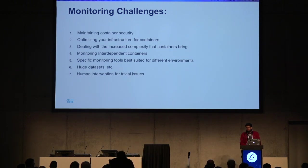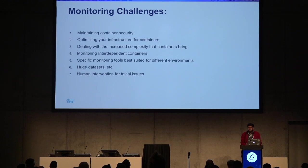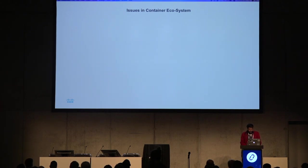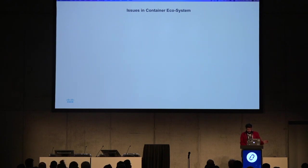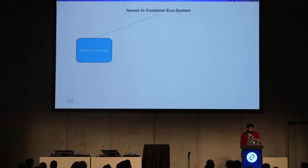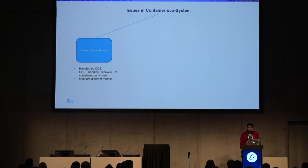When we have many containers running, there are huge datasets of logs generated, and for small issues human intervention is required — and that is what we want to avoid. We try to categorize some of the issues happening in a container ecosystem managed by an orchestration engine like Docker Swarm or Kubernetes. On the first level, there are system-level issues. These container orchestration systems have their own monitoring capabilities and keep monitoring the containers, load, and network.